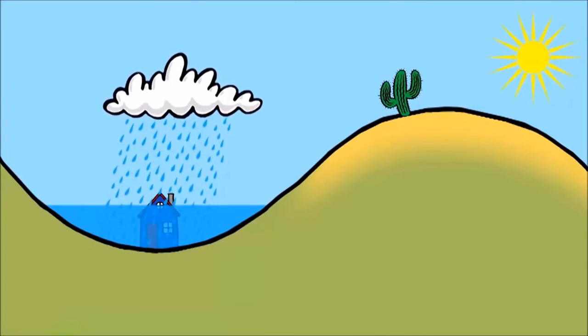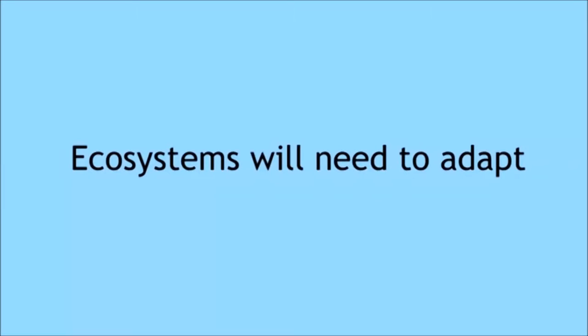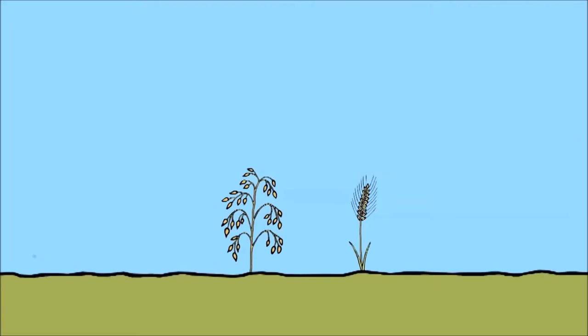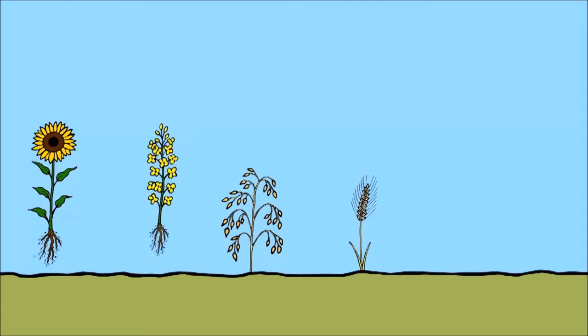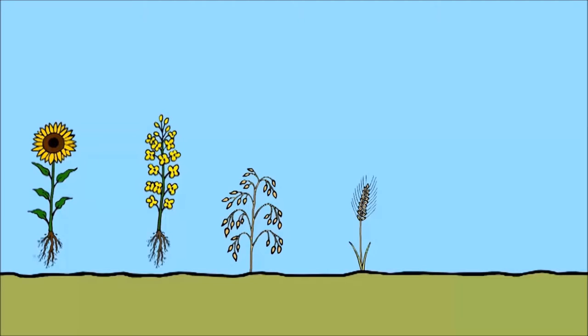Another consequence of temperature change is that natural ecosystems will need to adapt. We are already seeing this with European crops. Sunflowers and colza, that's rape, are replacing oats and barley.